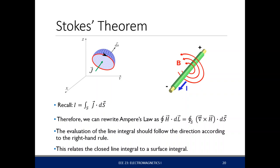Recall that for a current passing through a defined area, the total current is equal to the surface integral of J dot dS. This area is defined by a closed loop, and since a current is passing through that loop, there must be a magnetic field flowing around it.